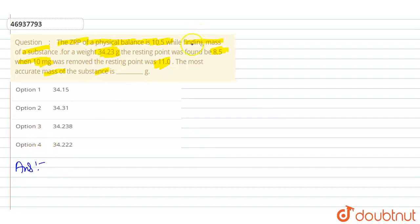What is the most accurate mass of the body when 10 grams is removed? What is a physical balance? The main thing here is to draw a simple diagram.